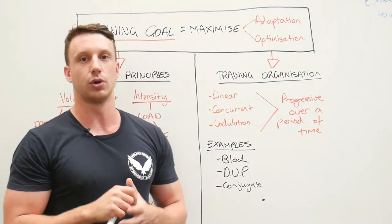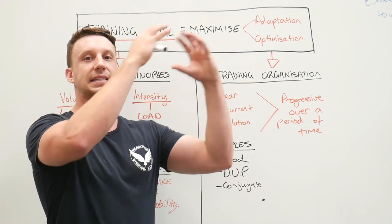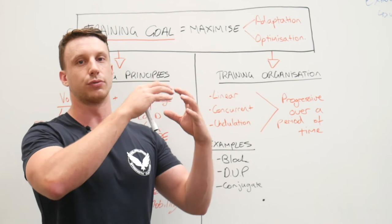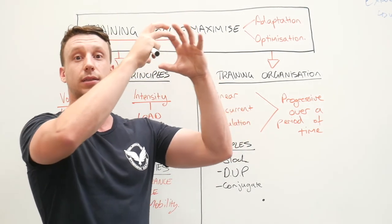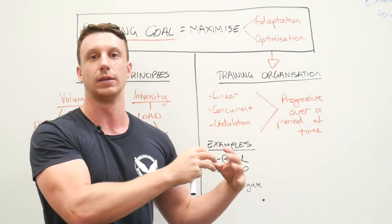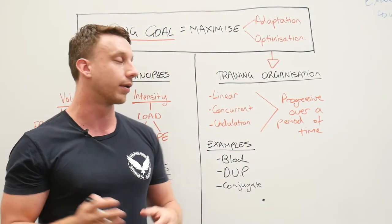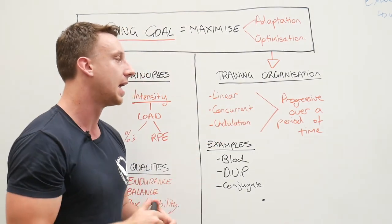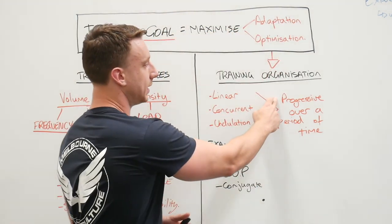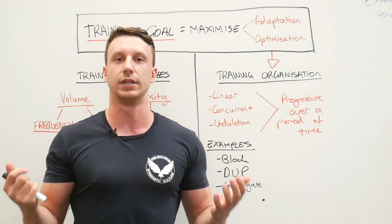Undulation is similar to concurrent training, but involves undulating intensities or volumes on a per-week basis — for example, a strength block in week one, a volume block in week two, and a speed block in week three, spinning those variables as you track through the program. Organizing training is really just the manipulation of these training principles over a period of time — whether linear, concurrent, or undulation, it's progressive over time. That is really all training is: progressing towards your training goal over a period of time.